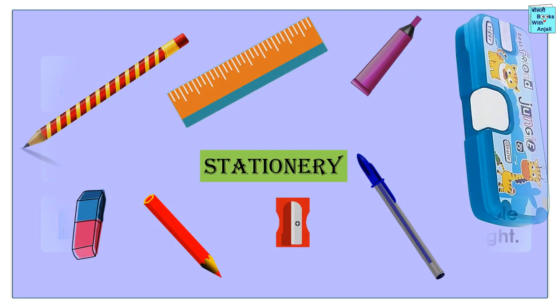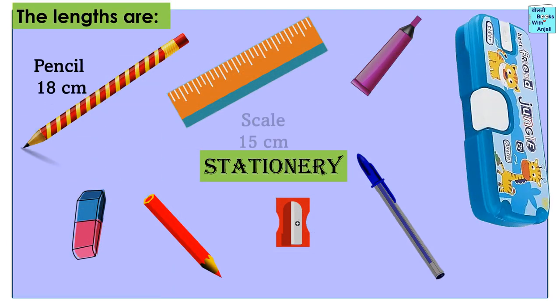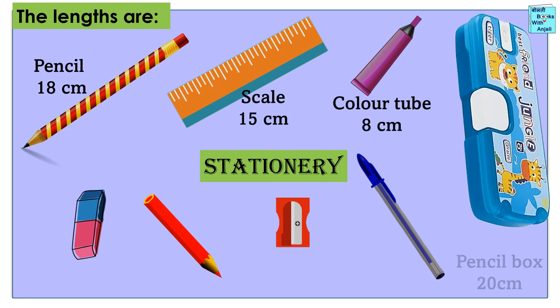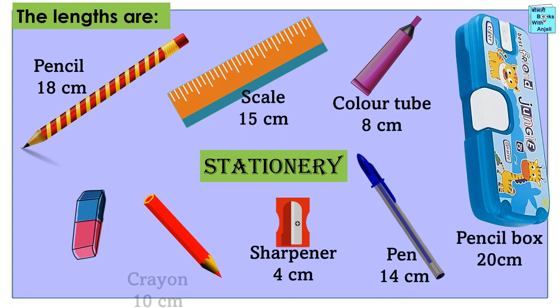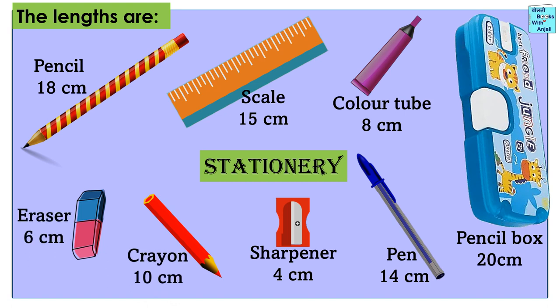The length of pencil is 18 cm, scale 15 cm, color tube 8 cm, pencil box 20 cm, pen 14 cm, sharpener 4 cm, crayon 10 cm, and eraser 6 cm.